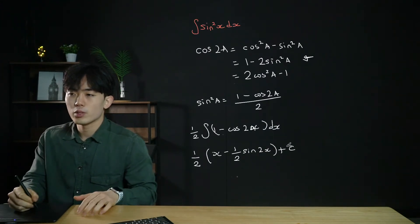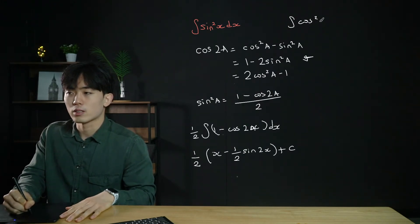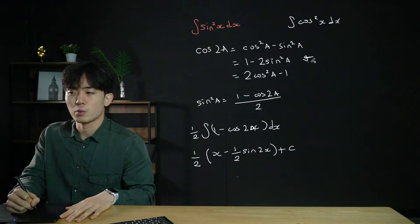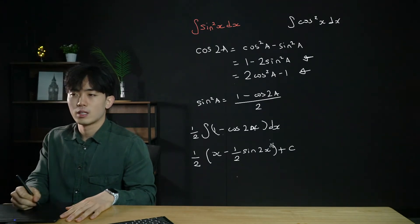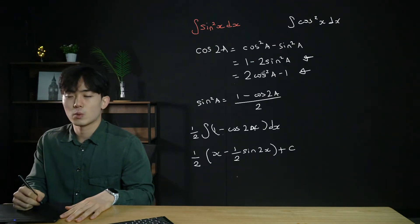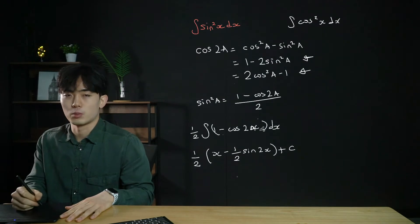If we were to integrate cos²x, then we're going to have to use the third way of writing the cos 2a formula. It's the same method — for both sin²x and cos²x we're going to have to use the cos 2a double angle formula.